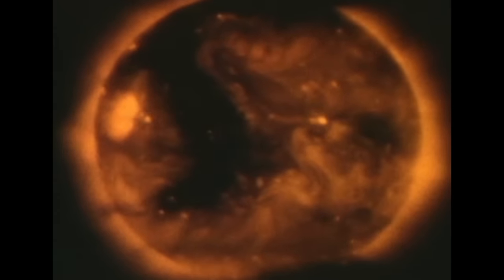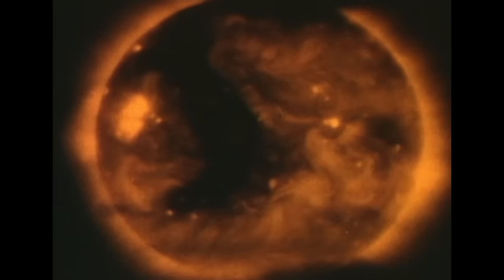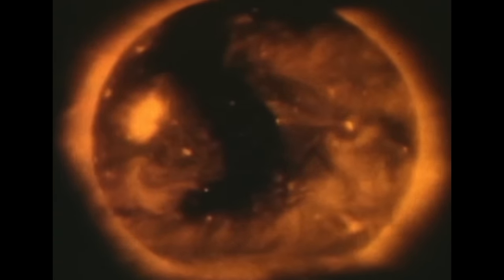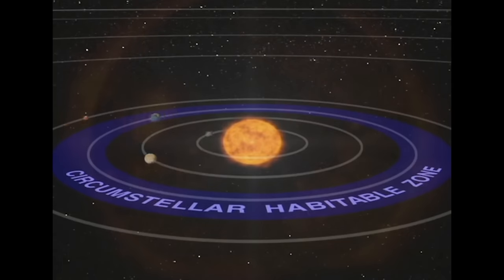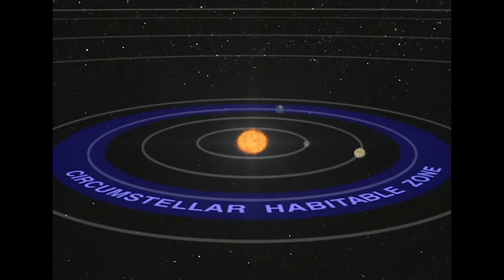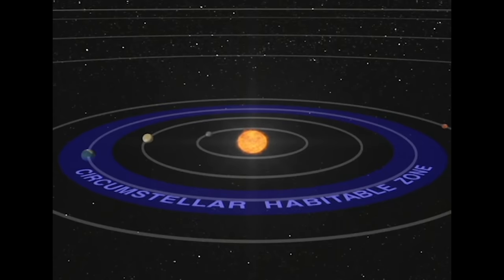We orbit what is known as a spectral-type G2 dwarf main-sequence star. It is well-suited for our needs. If the sun were less massive, like 90% of the stars in the galaxy, the habitable zone would be smaller.